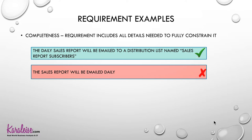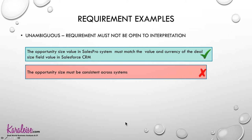A bad example would be: 'The sales report will be emailed daily' — to who? It doesn't tell you enough to complete the requirement. You need to specify which distribution list, especially in a system with multiple email groups. You don't need to over-explain every detail, but you must include the information necessary to actually fulfill the requirement.